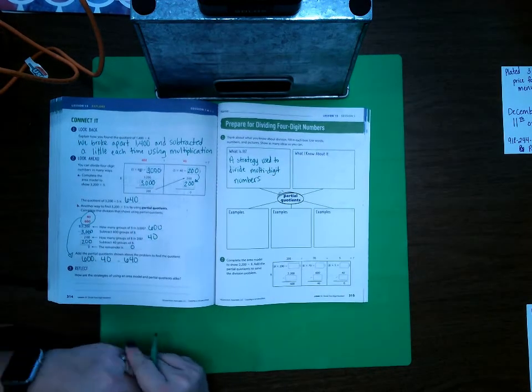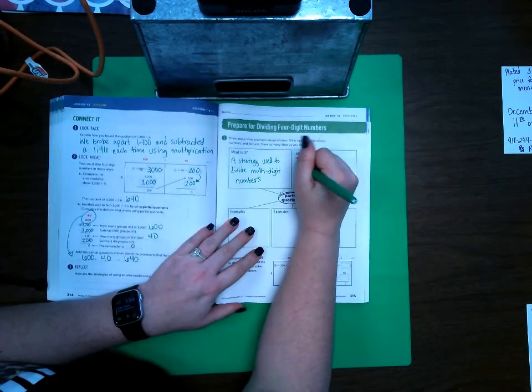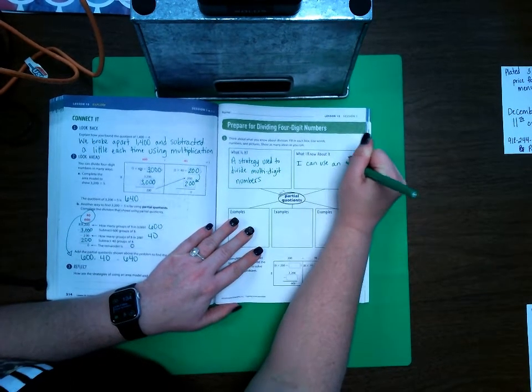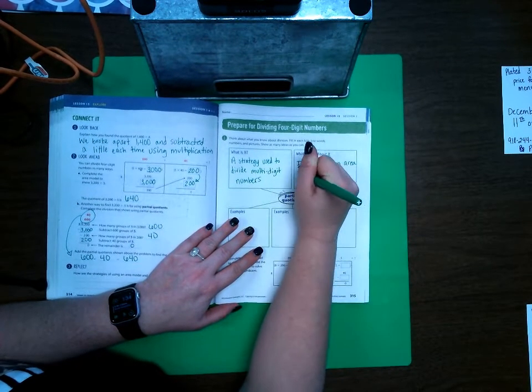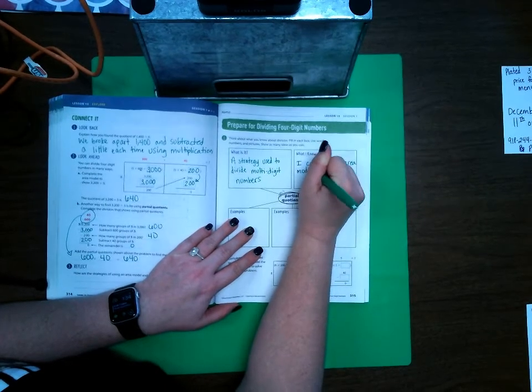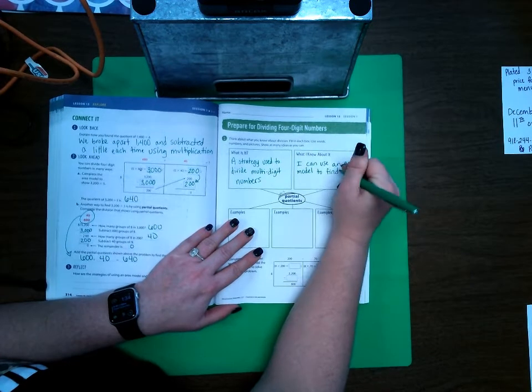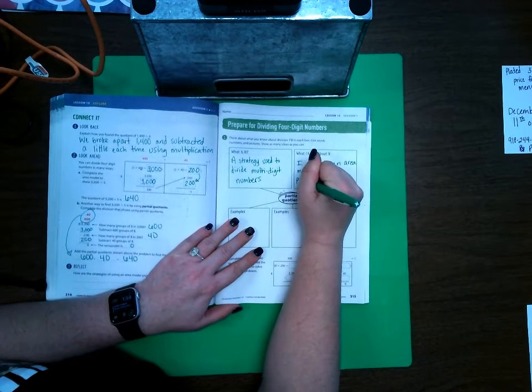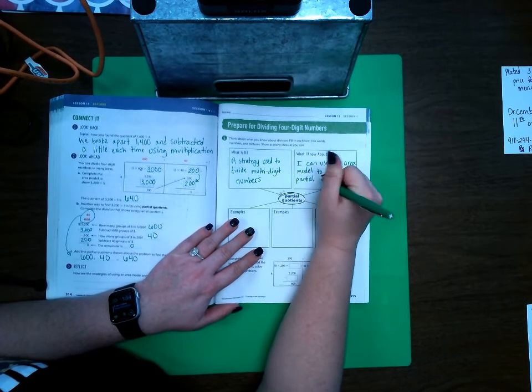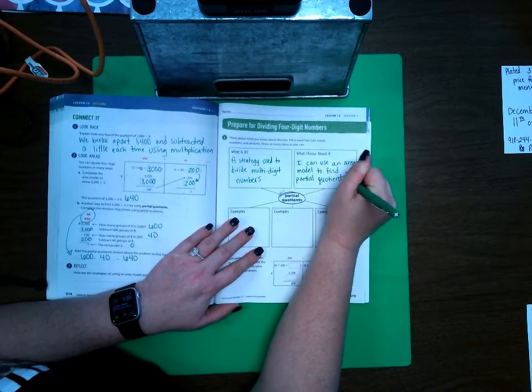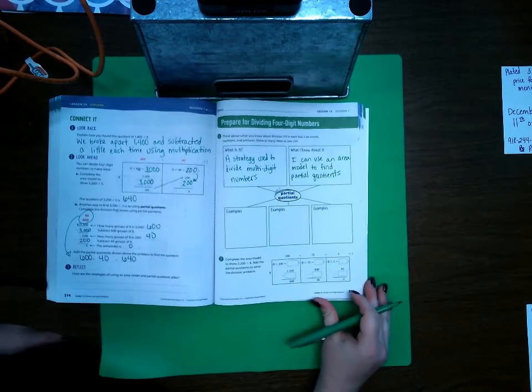What do I know about it? I know that I can use an area model to help find partial quotients. And some examples.